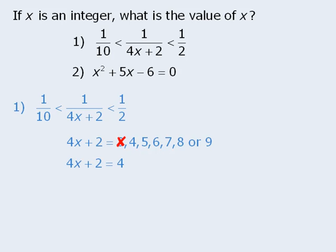Now there's also a problem if we let 4x plus 2 equal 4. When we solve this, we get x equals 0.5. Since 0.5 is not an integer, 4x plus 2 cannot equal 4. In fact, almost all of our values here will yield a value for x that is not an integer.